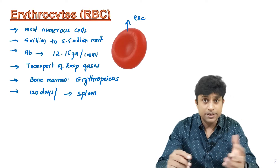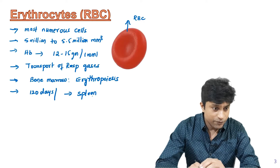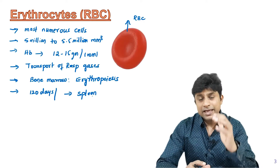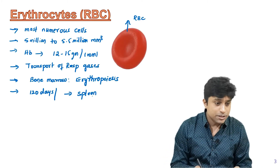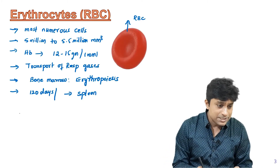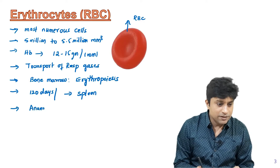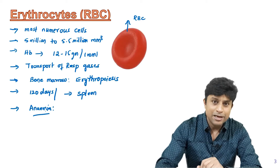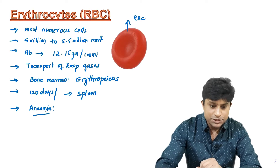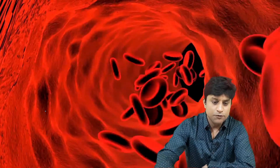RBC are responsible for transport of oxygen and carbon dioxide. A decrease in the number of RBC may lead to a condition known as anemia. You can see the beautiful animation of RBC, which are disc-shaped and moving in the blood vessels.